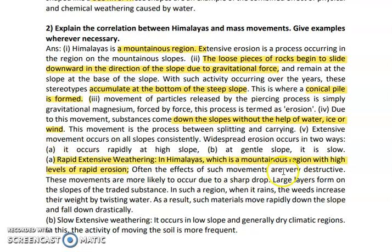These erosions are very destructive as a large area with a large amount of material comes down rapidly. Next is slow extensive weathering, in which in a dry climatic region the activity of moving soil is more frequent. It is basically seen on mountains which have a low or very small slope. This is all about the exercise of lesson number 2 — weathering and mass movement. A complete exercise with part 1 and part 2 is uploaded on the channel. Keep watching and subscribe.